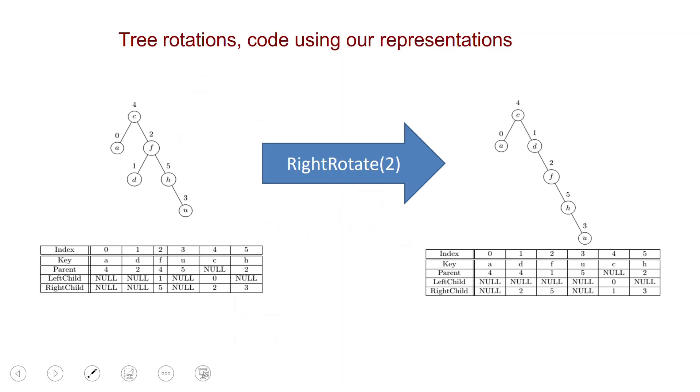And just to show you in action what happens again in the array notation, if this is our tree, it has this representation here as an array. And if you do a right rotation at 2 then what happens? Remember, 2 goes clockwise down,